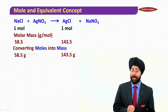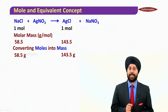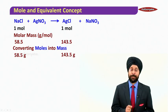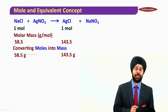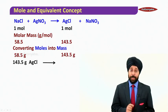Now from here, converting the moles into mass, we can write down 58.5 grams of NaCl is producing 143.5 grams of AgCl. Now let's do reverse analysis.